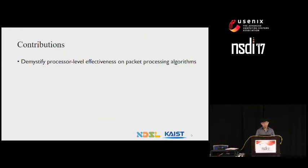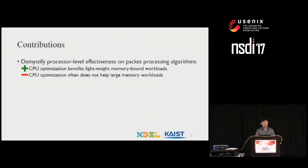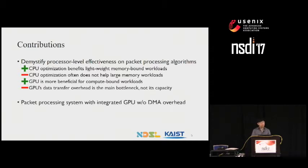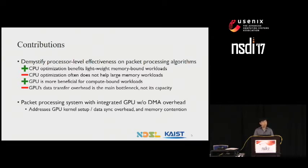Our findings show that CPU optimization does benefit lightweight memory-bound workloads, but may not improve performance if the workloads have large working sets. In contrast, GPU is beneficial to both memory and compute-bound workloads, and the relative performance advantage of optimized CPU over GPU is mainly due to DMA transfer overhead over PCI lanes rather than the lack of GPU capacity. With these findings, we build a packet processing system with integrated GPU that avoids the DMA transfer overhead, address challenges in integrated GPU such as kernel setup, data synchronization, and memory contention, and build real-world network applications that outperform CPU-only approaches by up to four times.